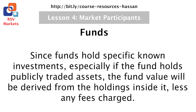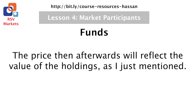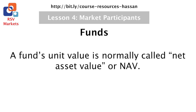How are funds valued? Since funds hold specific known investments, especially if the fund holds publicly traded assets, the fund value will be derived from the holdings inside it, less any fees charged. A fund's initial value is usually given an easily referenced price, such as $100 per unit, which is also one share in the fund's company. The price afterwards will reflect the value of the holdings. So a fund that has a $100 unit now at a value of $120 means the fund gained 20% since its inception. A fund's unit value is normally called the net asset value, or NAV.